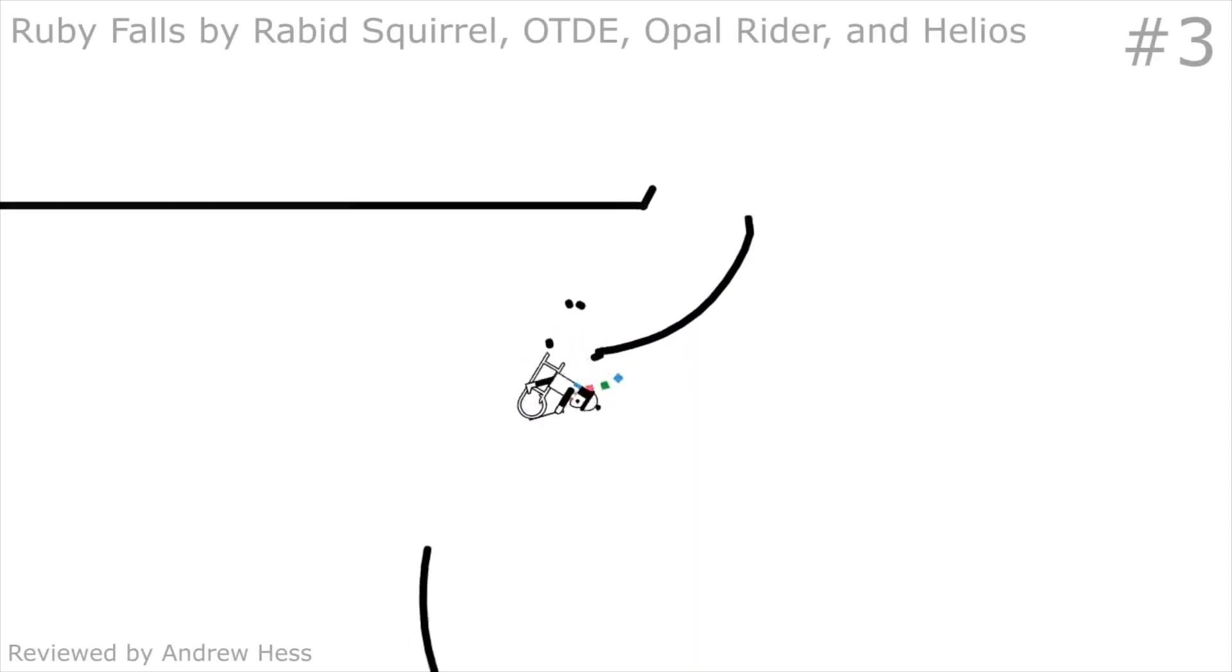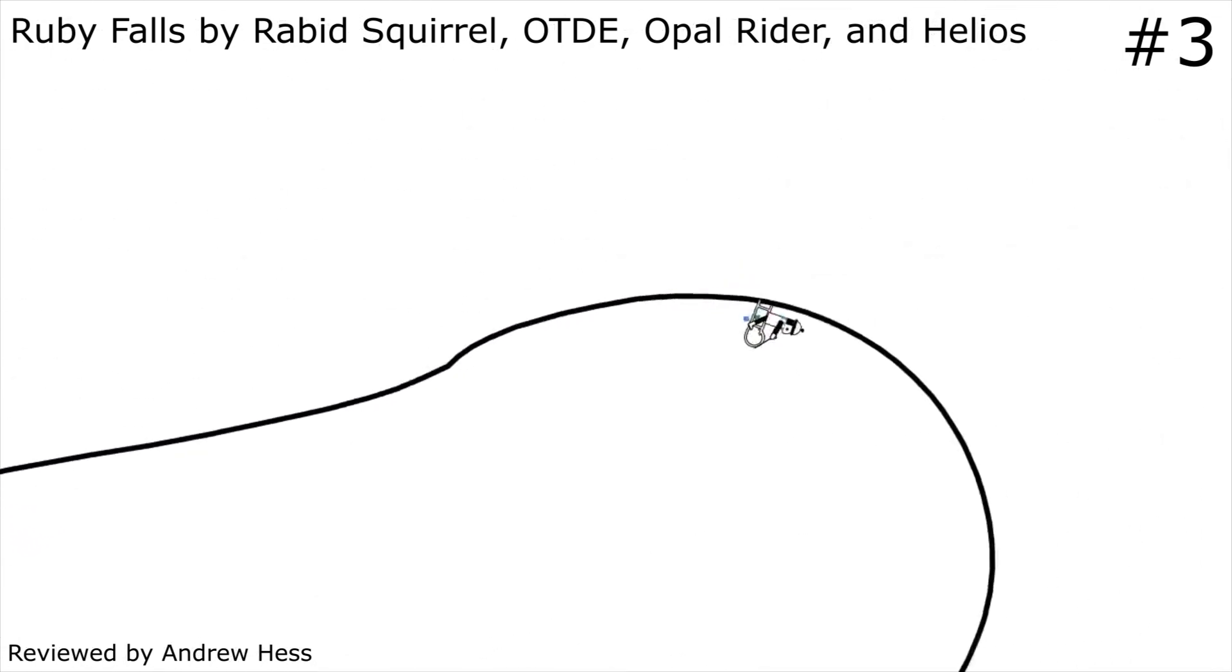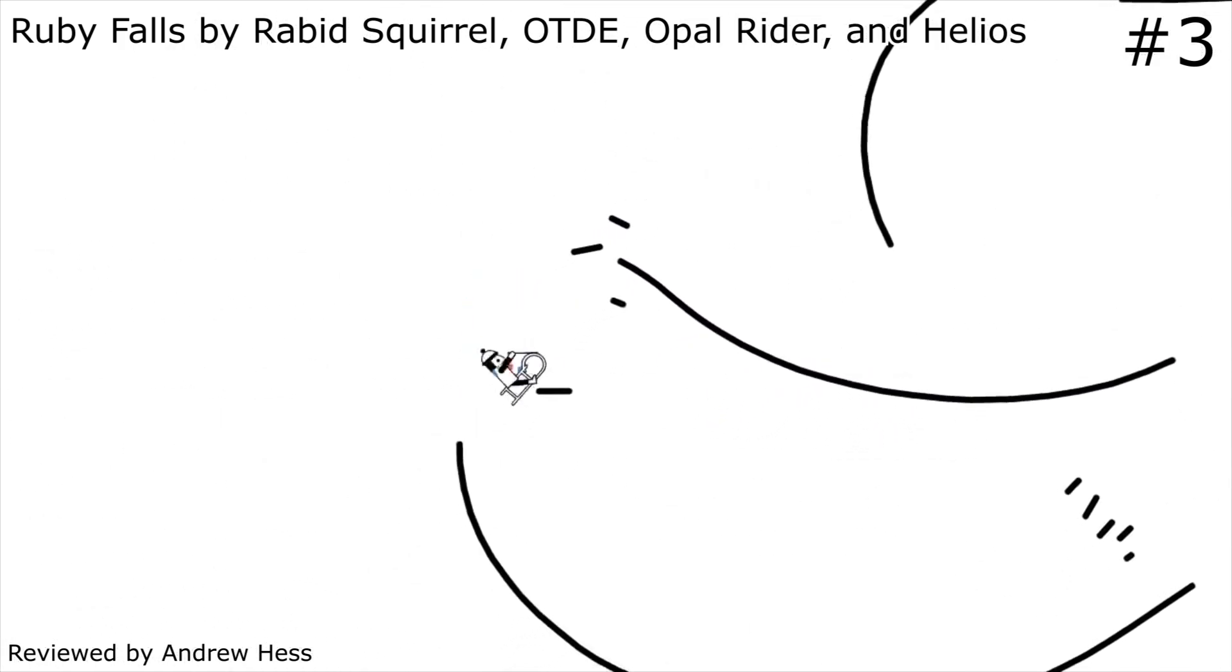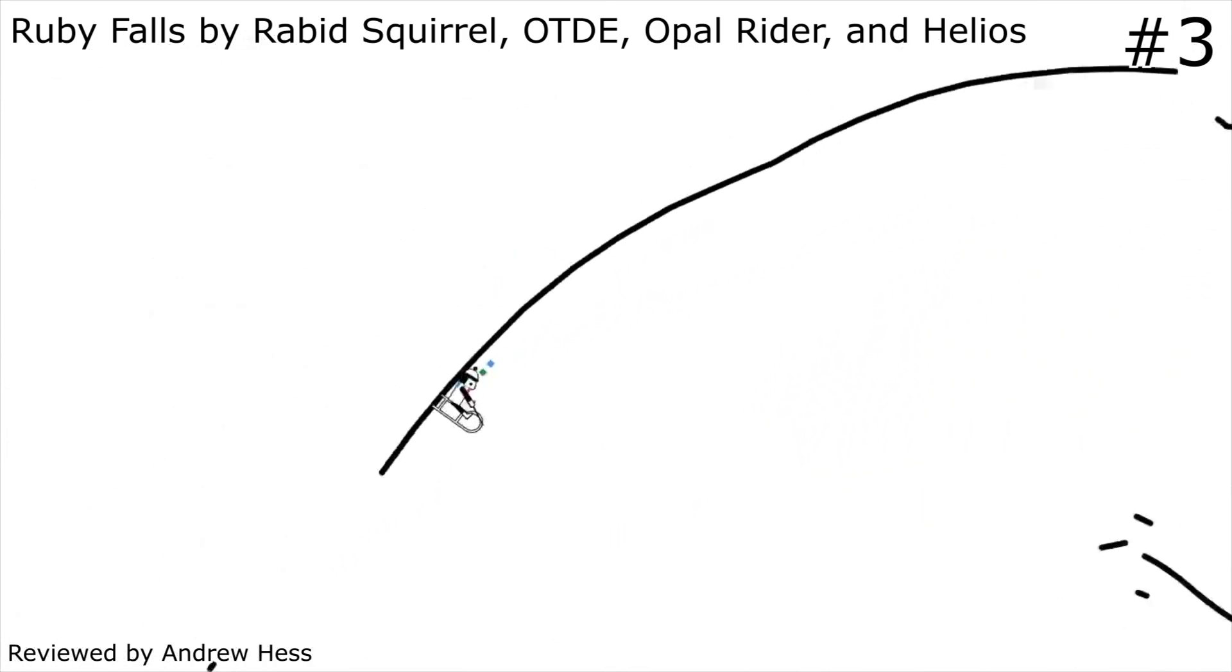Number 3, Ruby Falls by Rabid Squirrel, OTDE, Opal, and Helios. The first major release from Rabid Squirrel after the monumental This Will Destroy You, Ruby Falls surpasses the expectations set by its predecessor. With contributions from Opal, OTDE, and Helios, Rabid Squirrel expertly conveys the variety of moods explored by the titular Guster song with nuance and attention to detail second to none. The track begins with a laid-back section that uses manuals and limited quirk to evoke a sense of playfulness before moving into the guitar solo with which Rabid popularized the dashed lines technique.